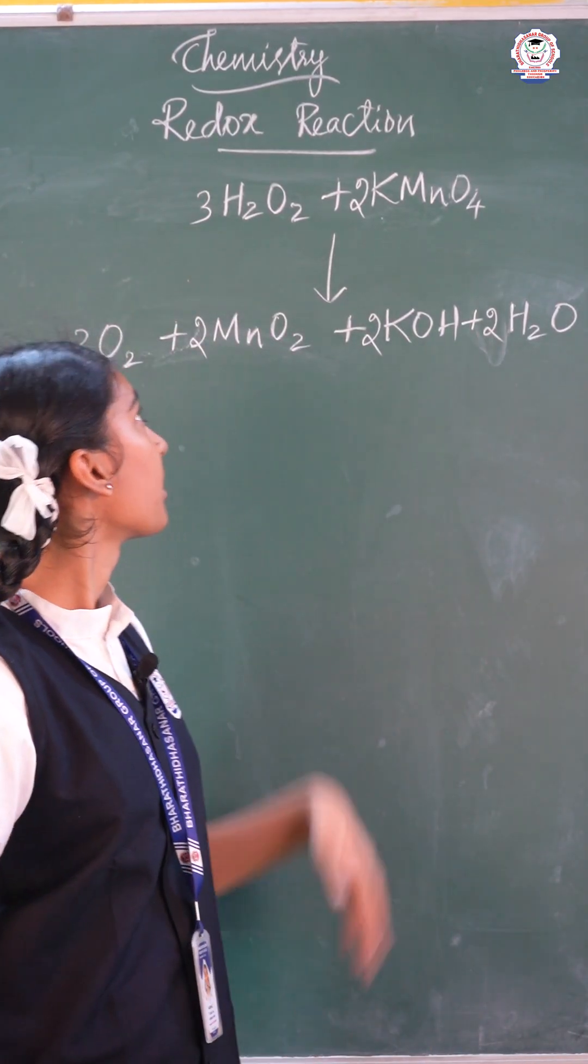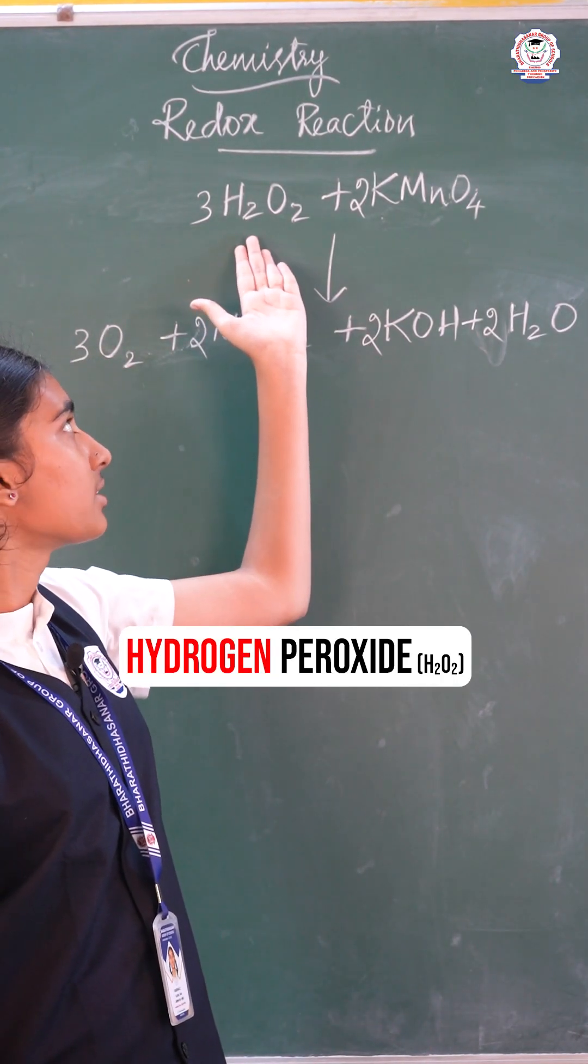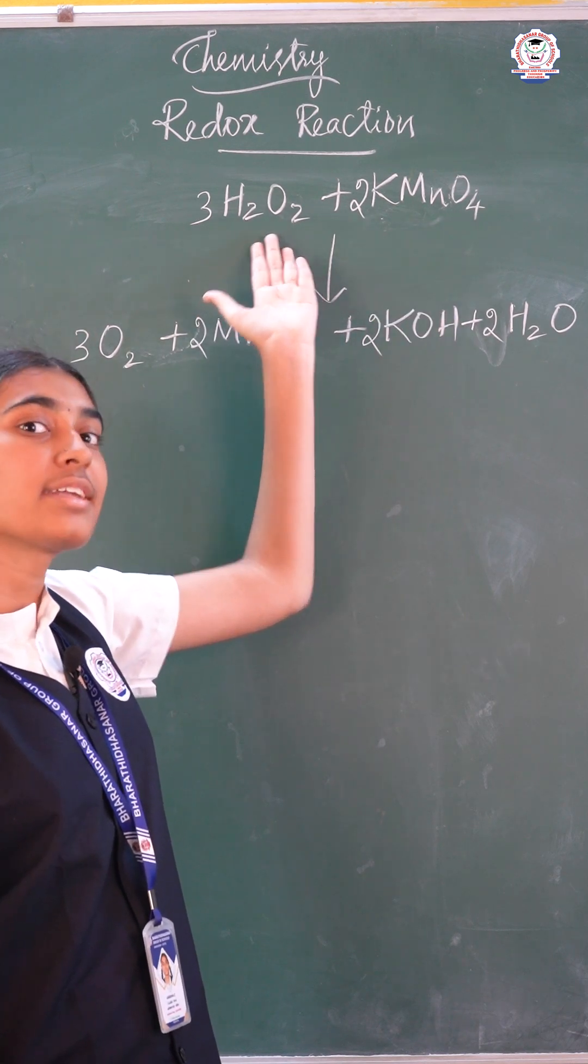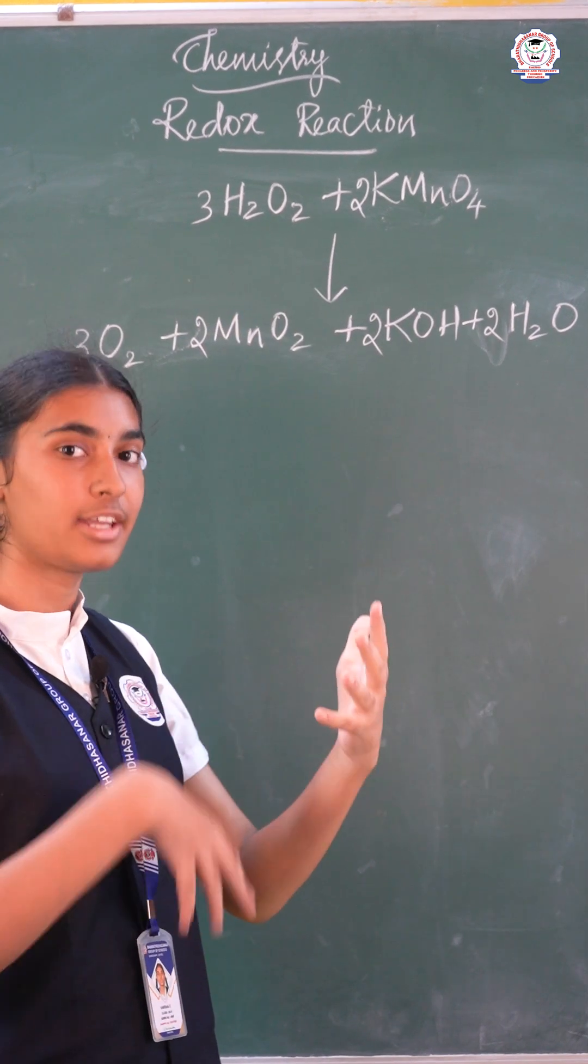Let's see the reaction. H2O2, hydrogen peroxide. KMnO4, potassium permanganate. Hydrogen peroxide can act as both oxidizing agent and reducing agent.